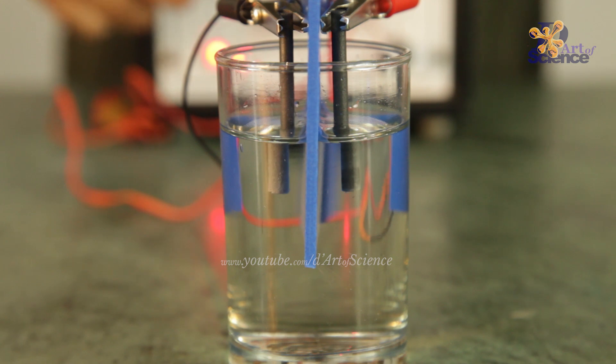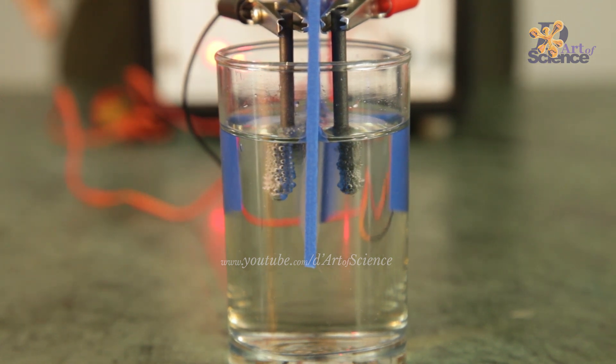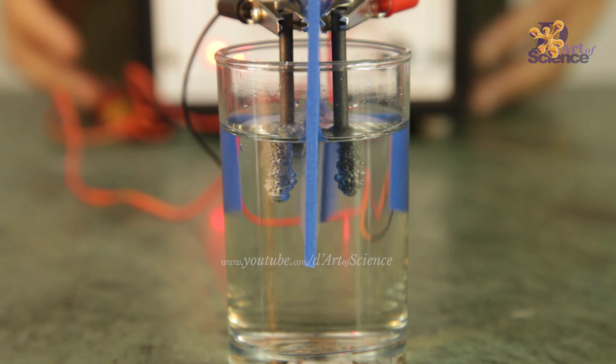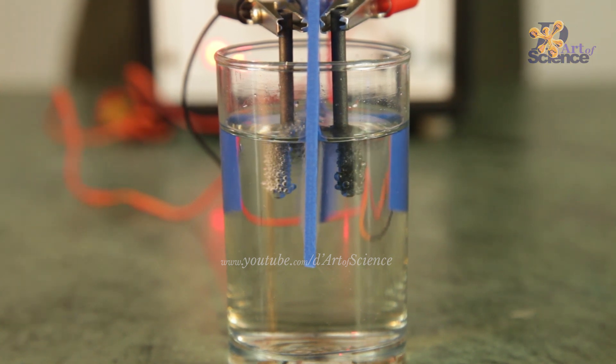In 1800, William Nicholson, a British chemist, showed that when electric current is passed through acidified water, bubbles of oxygen gas and hydrogen gas are produced at the two electrodes.